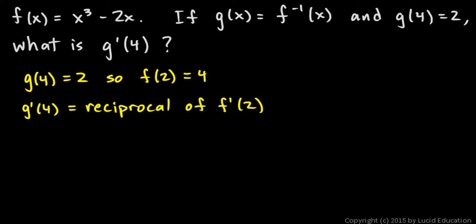g primed of 4 is what we are looking for. So let's find f primed of x. That will be easy. Just take the derivative of function f, and that's 3x squared minus 2. And so then compute f primed of 2. That's 3 times 2 squared minus 2, which is 3 times 4 is 12 minus 2 is 10.